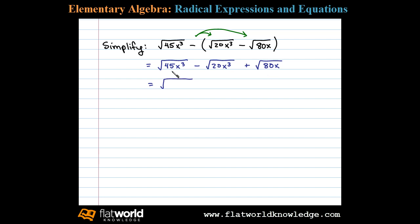Before we do that, let's identify the square factors of each. 45 can be written as 9 times 5. x³ can be written x² times x. Minus 20 can be written 4 times 5, and again x³ is x² times x. Now 80 is equivalent to 16 times 5 times x.